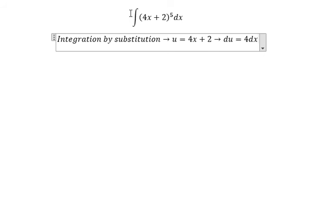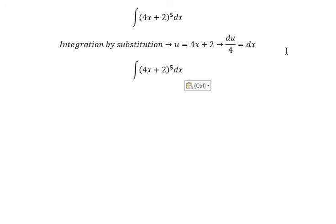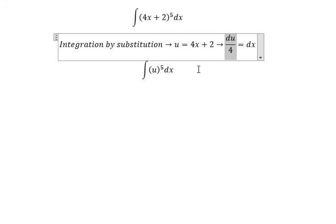Because we don't have the number 4 in here, so we divide both sides by 4. So we change this to u dx. We change for du over 4.